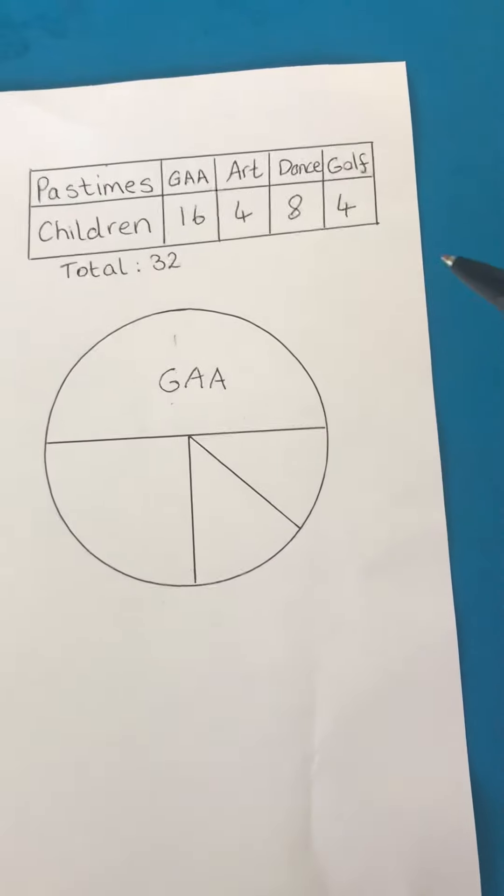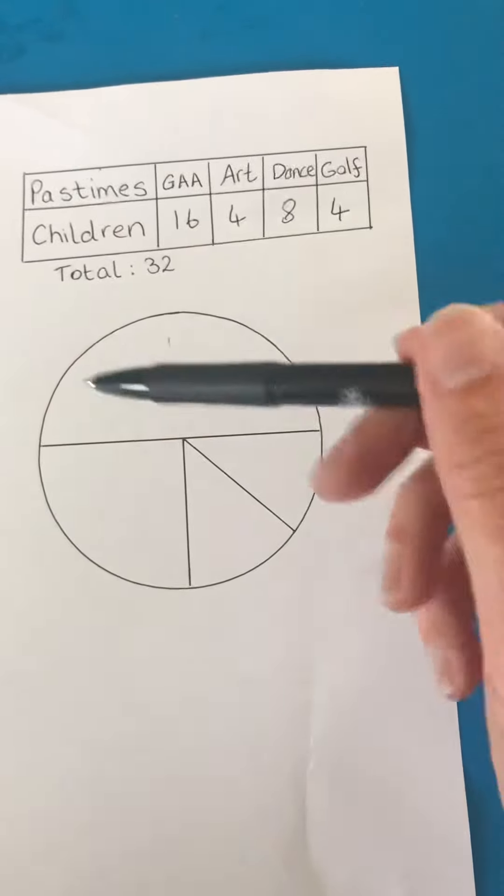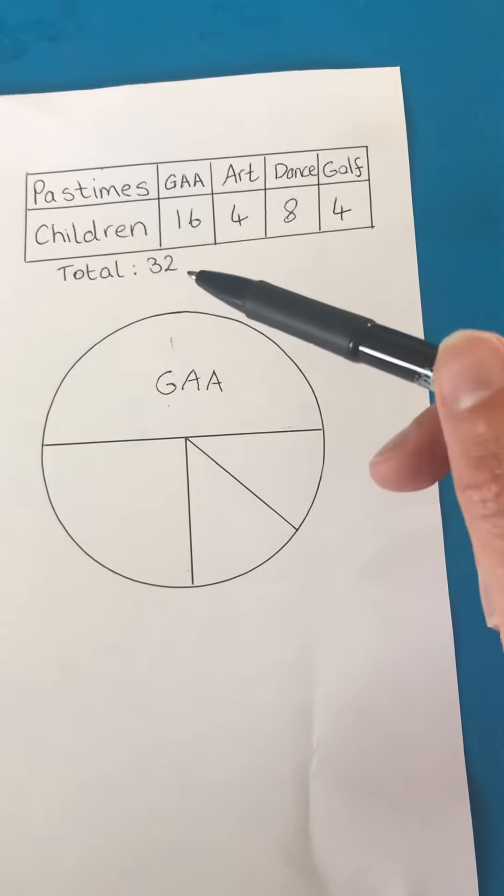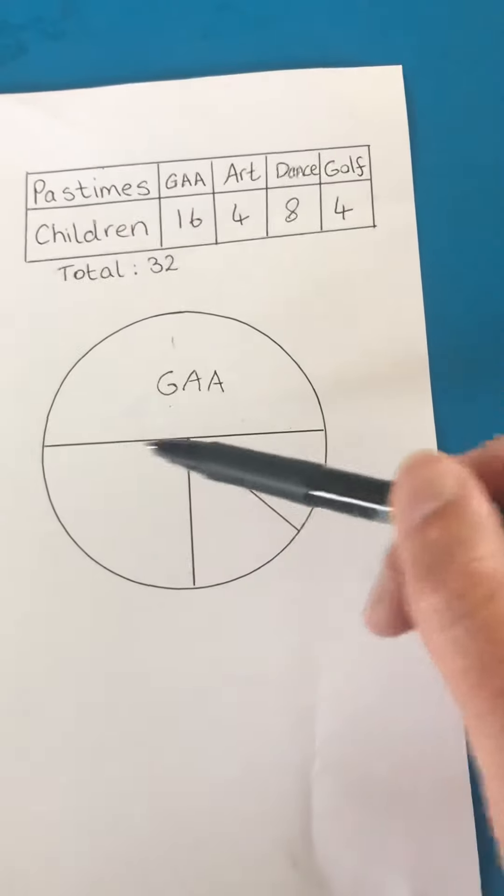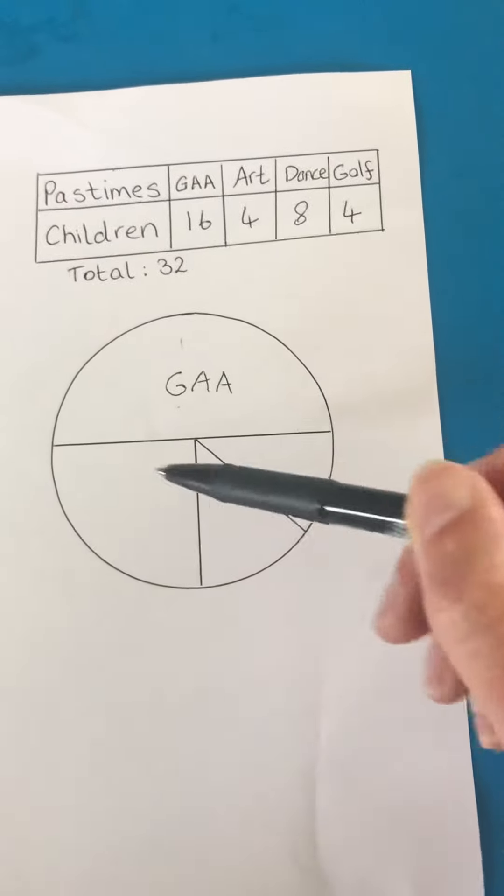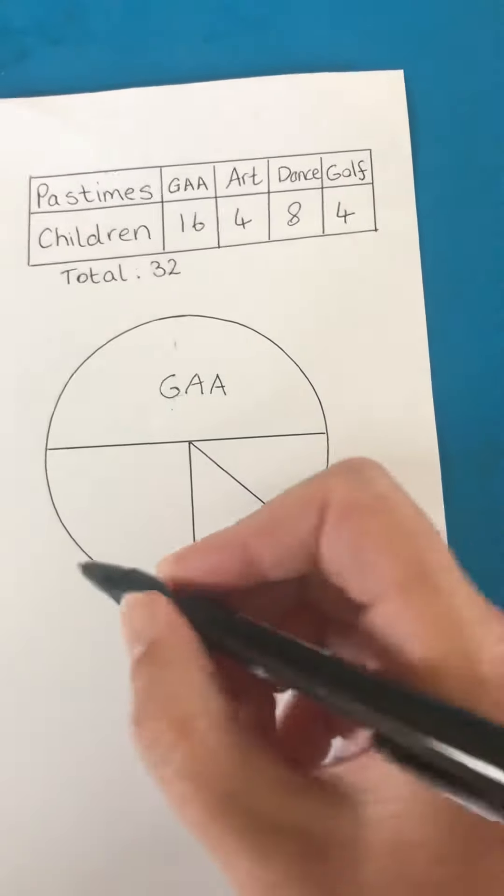Now if I look at my numbers again, a quarter of the total amount is 8 because the total amount is 32. So I have then split the other sector into a quarter piece here, and a quarter of the children, 8 children, do Dance.